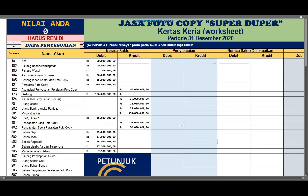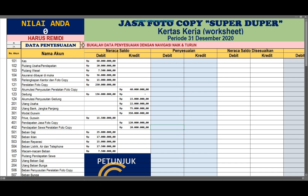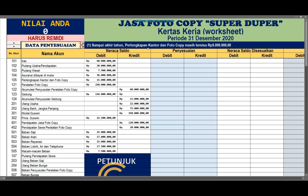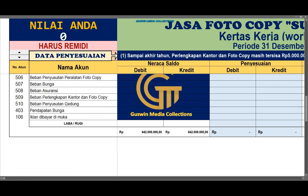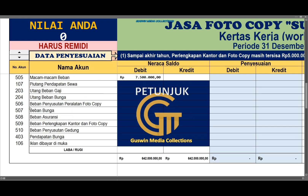Mari kita lihat beberapa contoh bagaimana skor itu berubah. Kalau misalnya di sini ada data penyesuaian, saya ambil dari yang awal. Di sini misalnya sampai akhir tahun, perlengkapan kantor dan fotokopi masih tersisa 5 juta. Berarti bunyi jurnal penyesuaiannya di sini, debitnya beban perlengkapan, kreditnya perlengkapan. Ternyata di sini data perlengkapan kantor 15 juta. Di sini dikatakan tersisa 5 juta, berarti terpakai 10 juta. Bunyi jurnalnya debit beban perlengkapan. Sudah disiapkan di sini akun bernama beban perlengkapan.